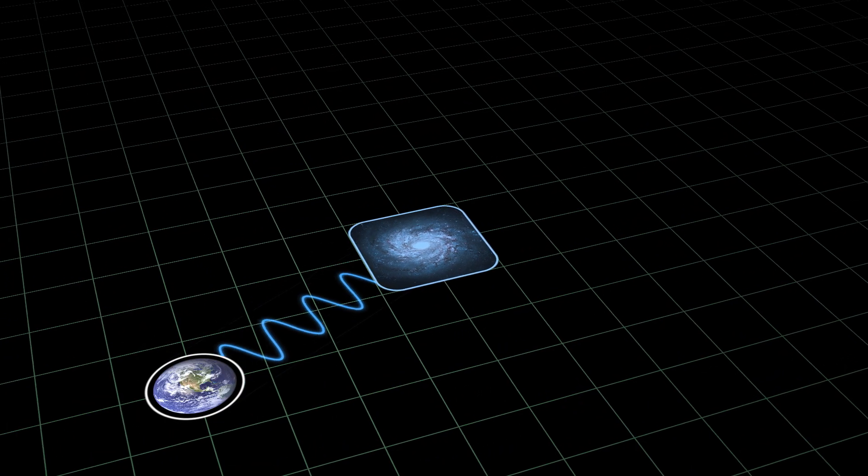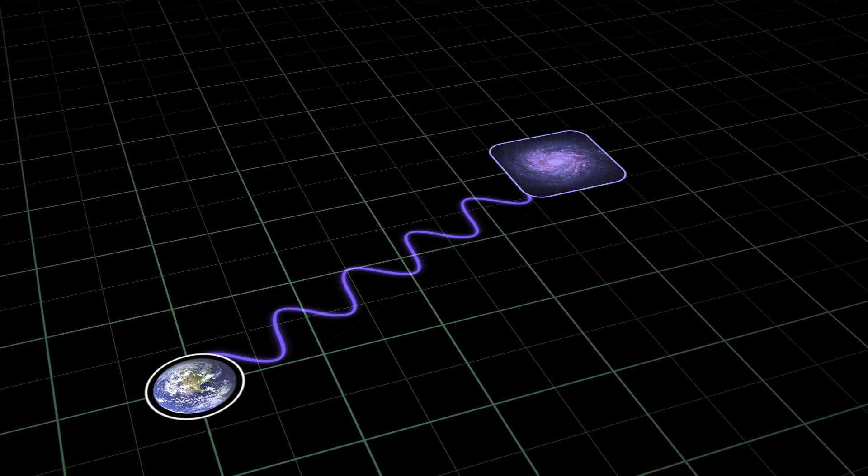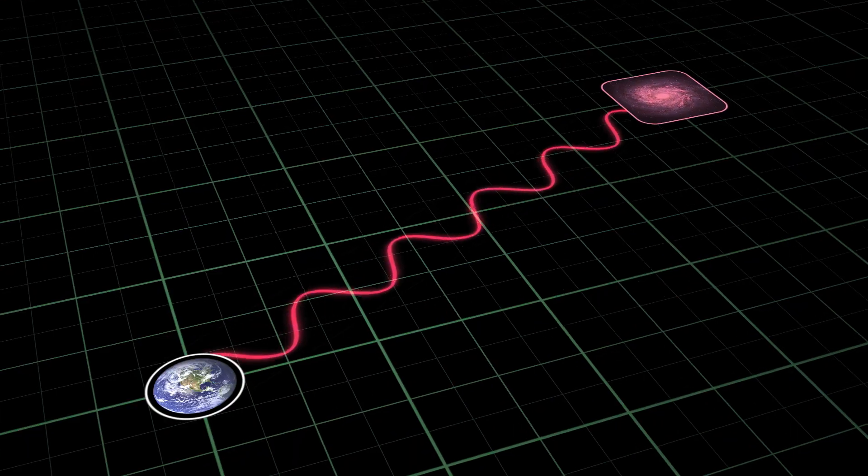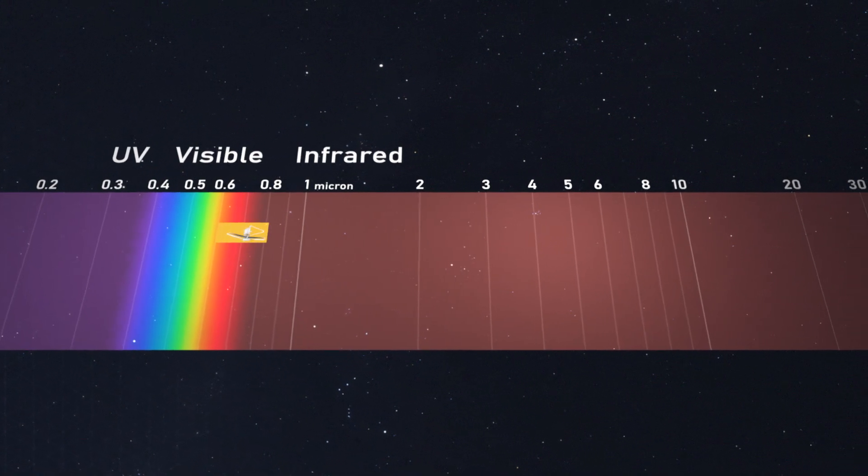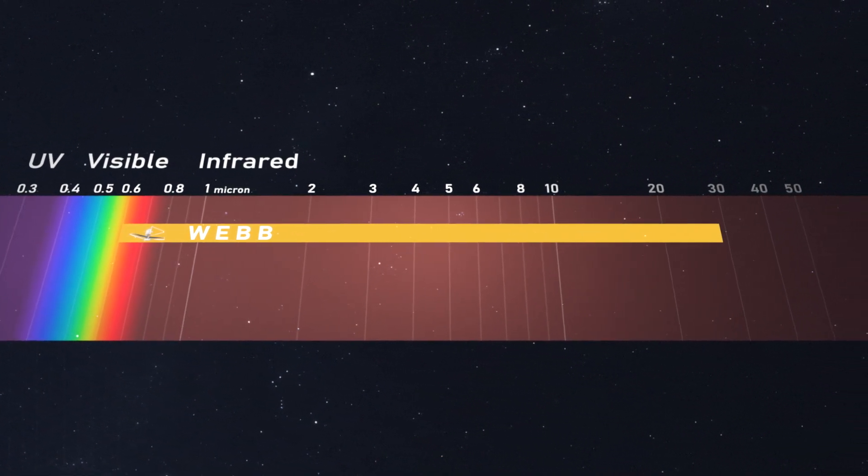The universe's expansion stretches light traveling through space, a phenomenon called redshift because the light waves we receive from receding objects are stretched to longer, redder wavelengths. Webb is designed to see this redshifted light so that it can study the first, most distant galaxies.